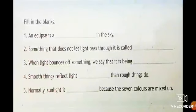Next we'll see the exercise, filling the blanks. An eclipse is a shadow in the sky. Something that does not let light pass through it is called opaque.